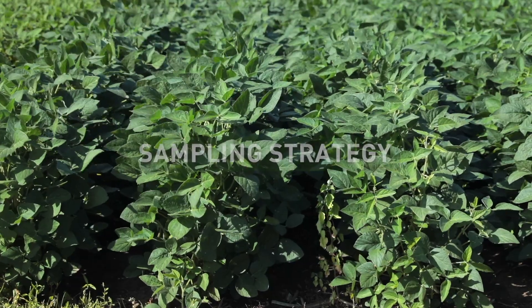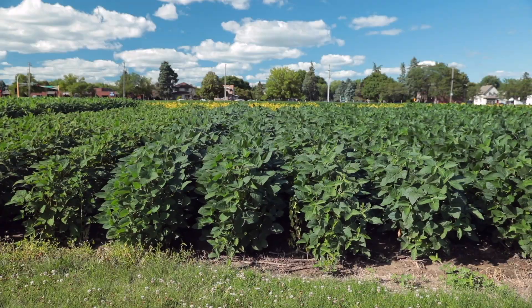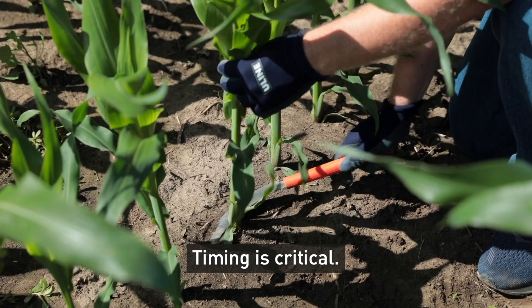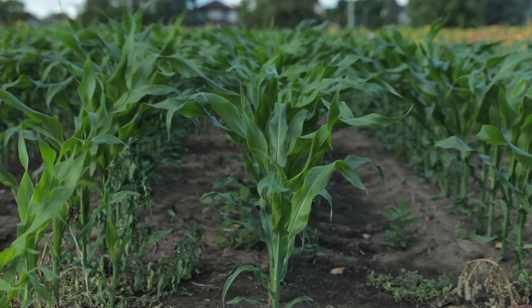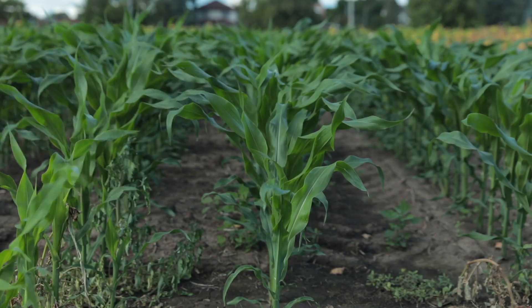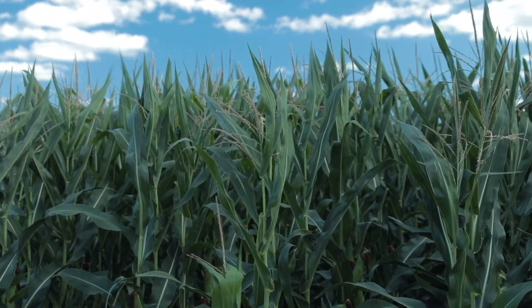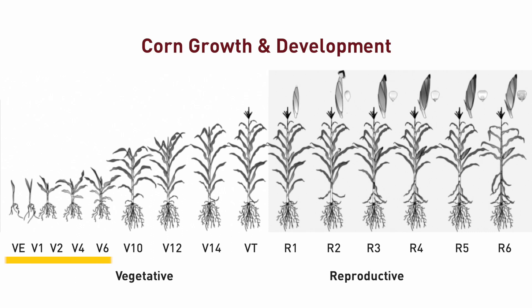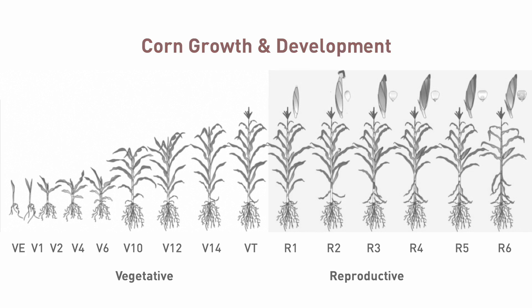There are a few things to consider when taking plant tissue samples. First, timing of sampling is critical. We want to avoid sampling too early or too late in the growing season. Too early, plants typically have not taken up a large portion of their nutrients, and too late, plants tend to redistribute nutrients within their tissues and tissue concentrations will decline.